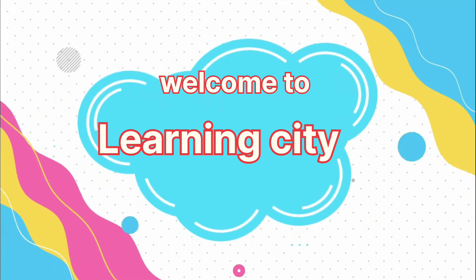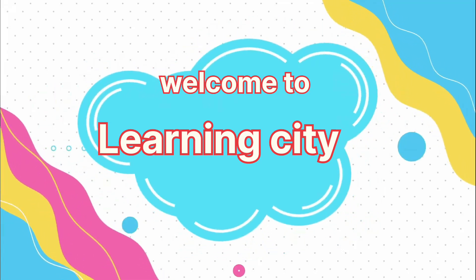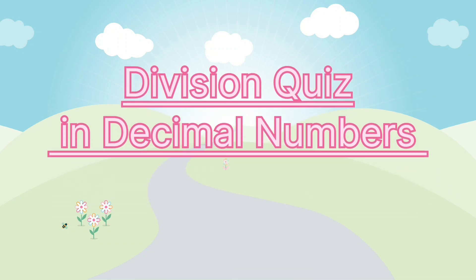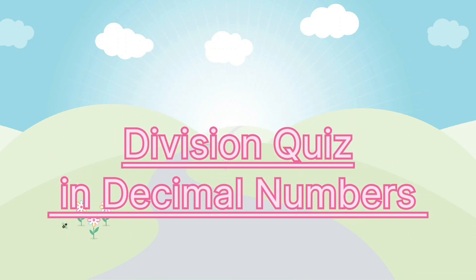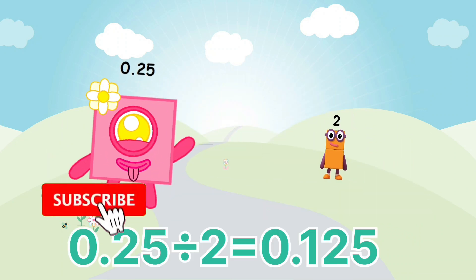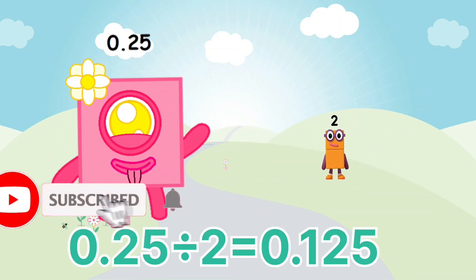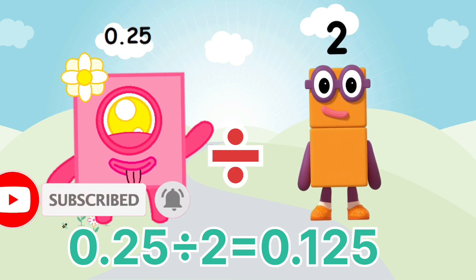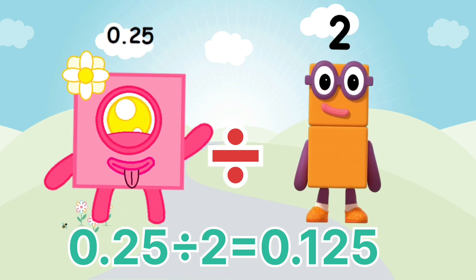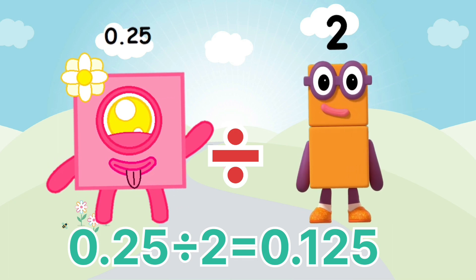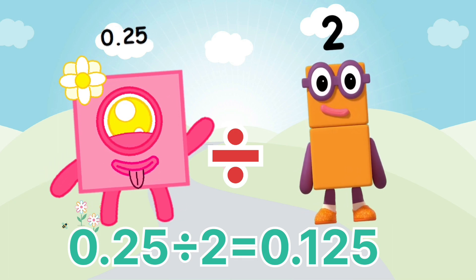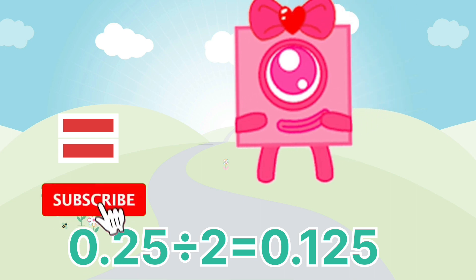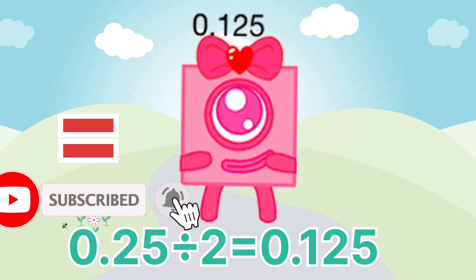Welcome to Learning City. Please subscribe. Let's learn about division quiz with decimal numbers and simple numbers. 0.25 divided by 2 equals 0.125.